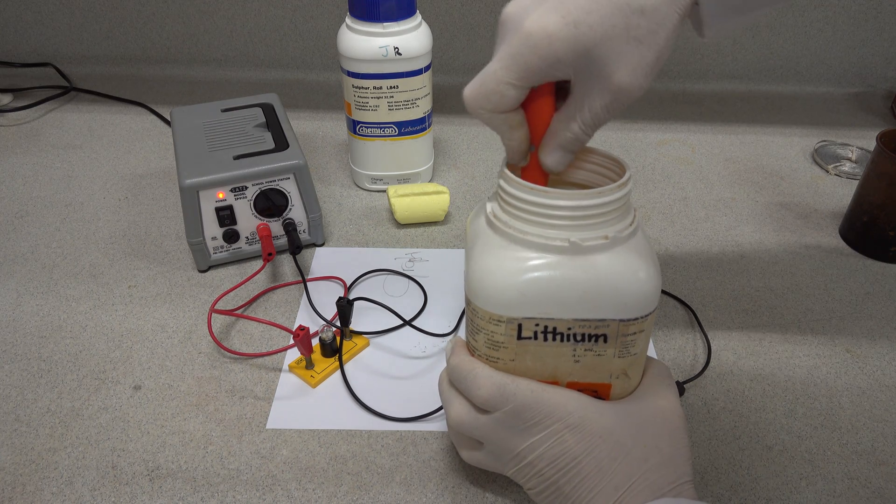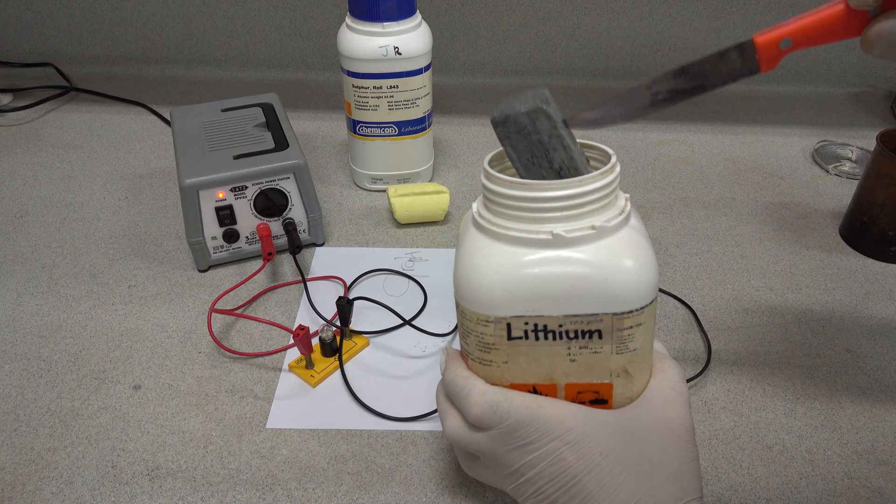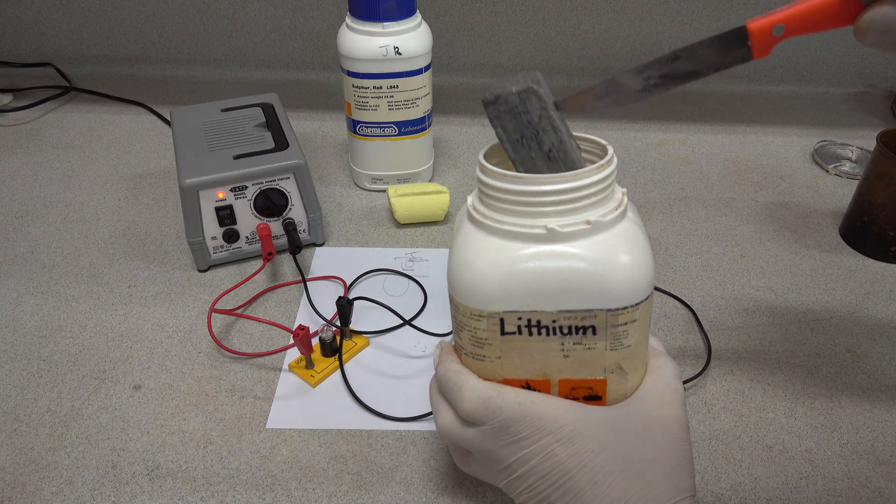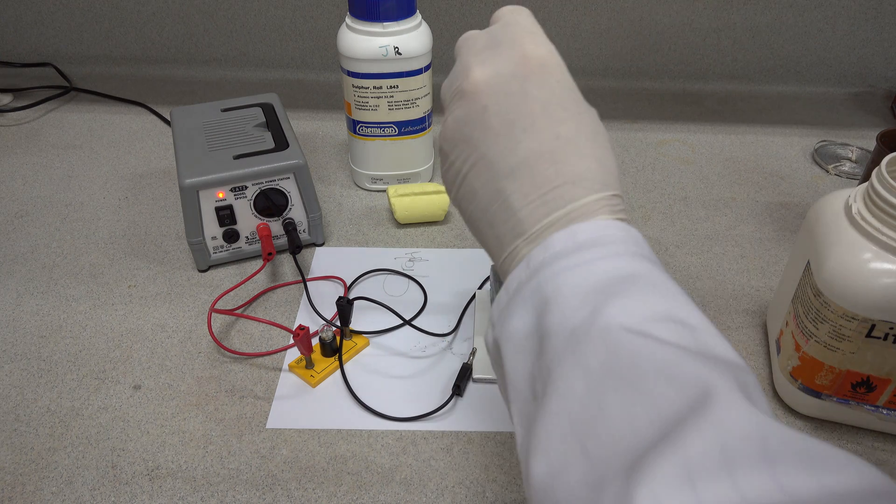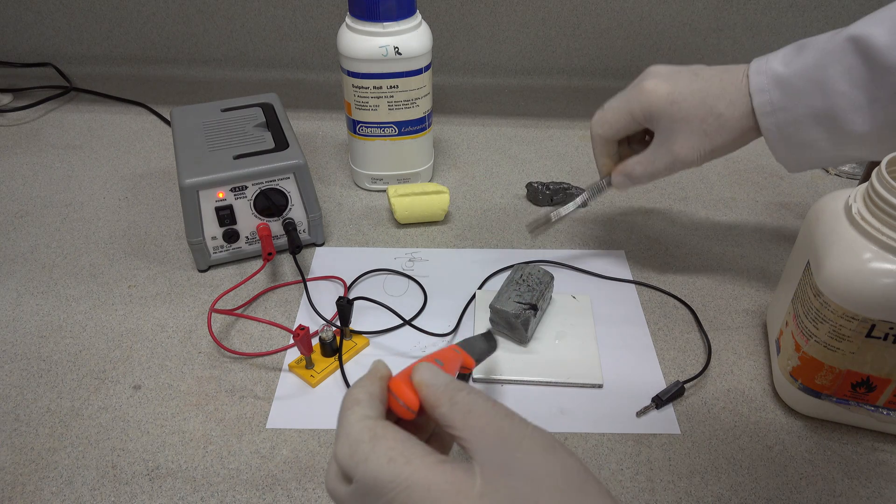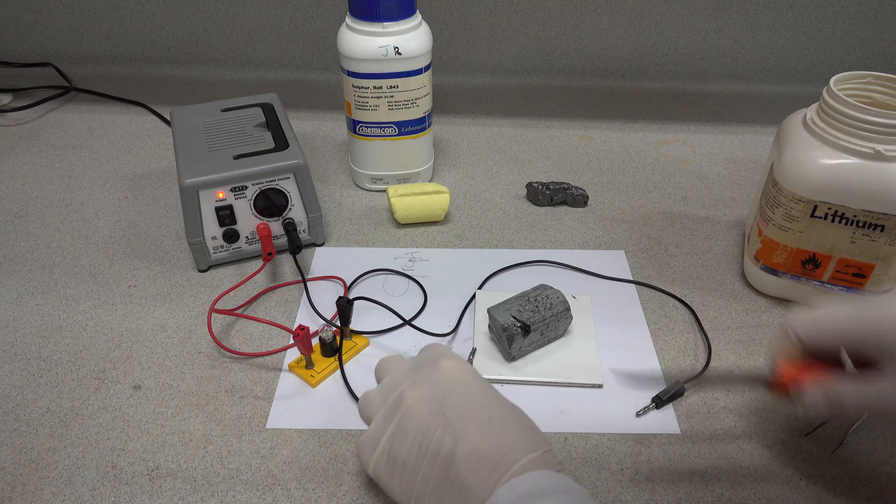It's rather soft, so I can put the knife into it here rather easily. Just letting the excess oil drain off. Onto the white tile goes the lithium. Just need my tweezers to manipulate it a little bit. You can see we've already cut a slice off here.